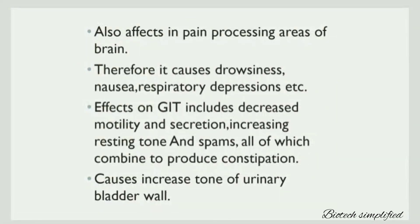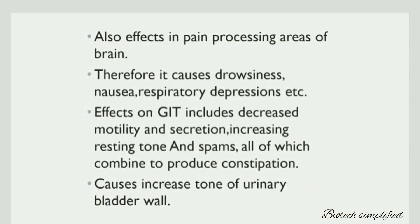Morphine also affects the gastrointestinal tract, where decreased motility and secretion occurs. It also increases resting tone and spasms, and all of this combines to produce constipation. It also causes increased tone of the urinary bladder wall, thus increasing urinary retention.